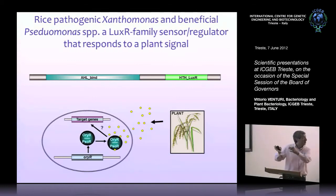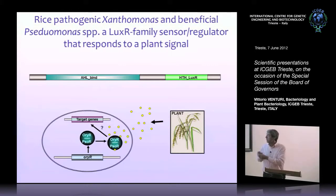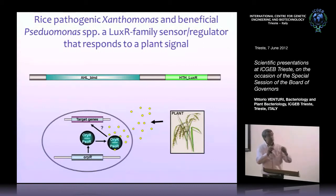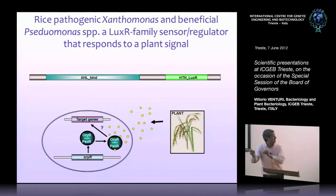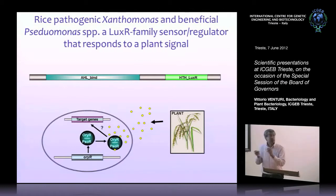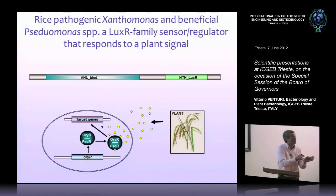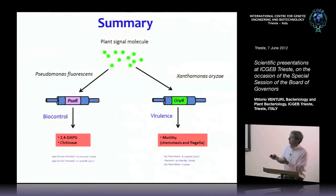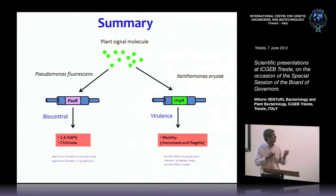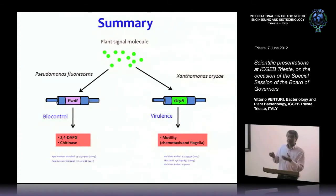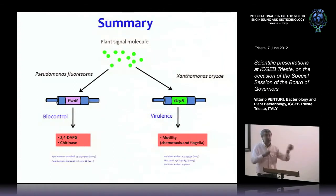So here we have what we call a new inter-kingdom signaling system that bacteria evolved to detect plant signals. It tells the bacteria: 'I am now near my plant,' and it will determine whether the interaction is beneficial or pathogenic. This makes applications more difficult — if we go and block this signaling system, we may control the pathogen, but we're also going to affect the beneficial community of the plant. We've done a lot of work using genomics, microarray, and proteomics to discover what genes and systems are regulated by this inter-kingdom system.